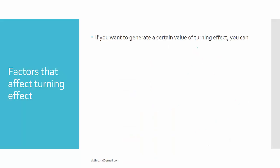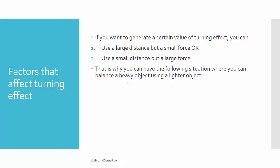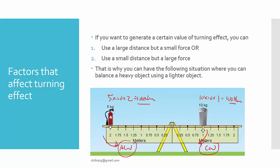To generate a certain turning effect, you can use a large distance with a small force, or a small distance with a large force. For example, a 10 kg object at 1 meter gives 100 Newton meters clockwise, while a 5 kg object at 2 meters also gives 100 Newton meters anticlockwise. These two torques oppose and cancel each other, so the seesaw remains balanced with no rotation.